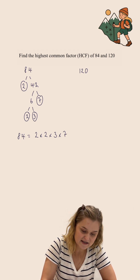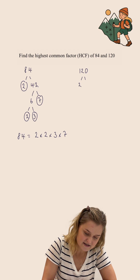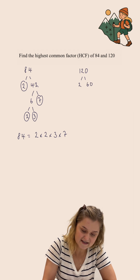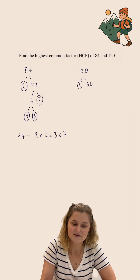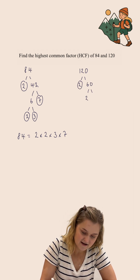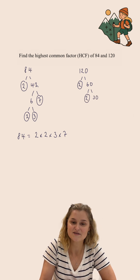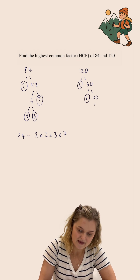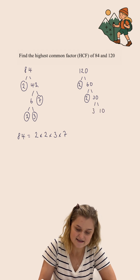Now I'm going to do the same for 120. I can split 120 into 2 and 60. 2 is prime so we circle that one. 60 I can split into 2 and 30. 2 is prime so we circle that one. And 30 I can split into 3 and 10.